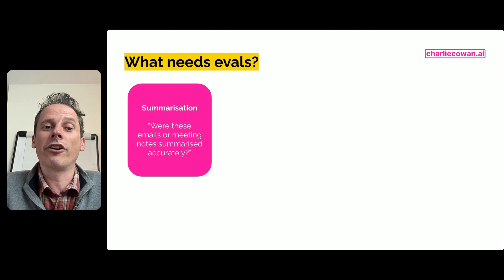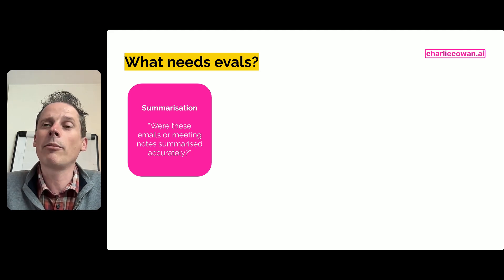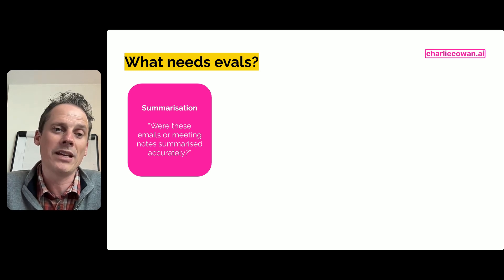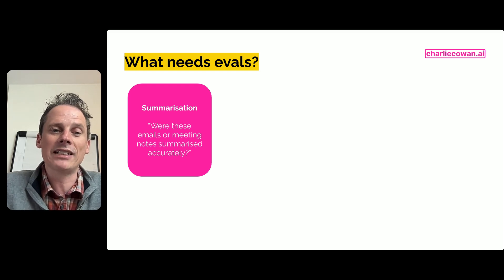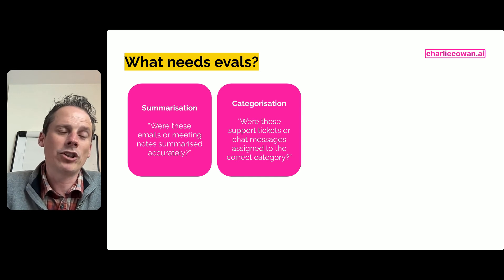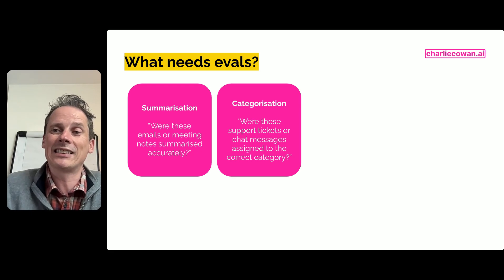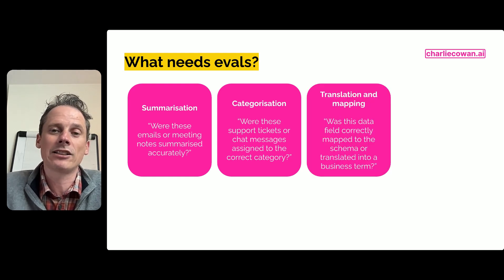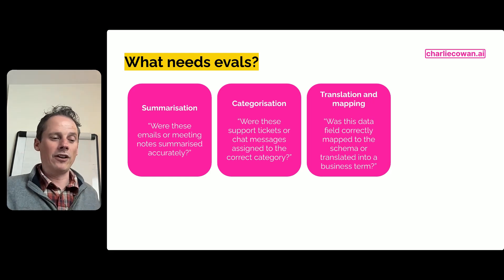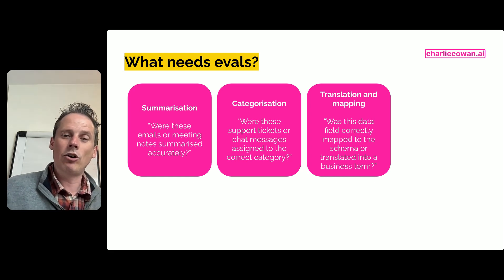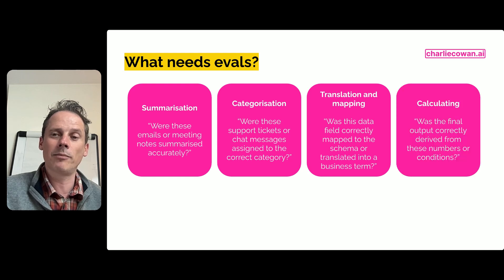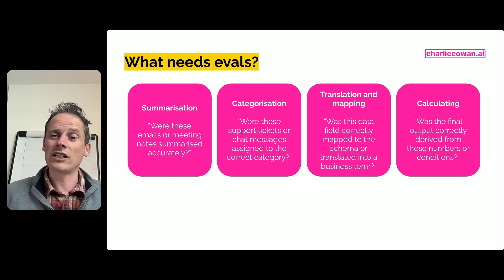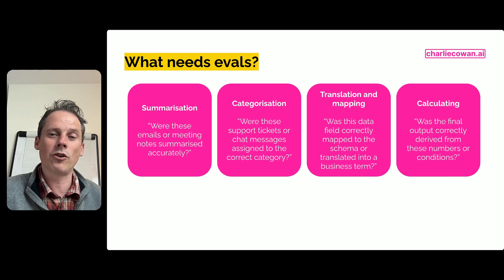So let's think of some scenarios when that might be. Summarizing - maybe we've created an AI model that is going to summarize emails or documents from a meeting, and we might be asking were these emails or meeting notes summarized accurately or not? We might be trying to categorize someone or something after a specific meeting. Were these support tickets or chat messages assigned to the correct category? Maybe we're doing some kind of data mapping and we need to understand whether it was translated correctly. Was this data field correctly mapped to the schema or translated into the correct business term? Maybe we're doing something mathematical. Was this final output correctly derived from the numbers or the conditions of the formula that we provided?